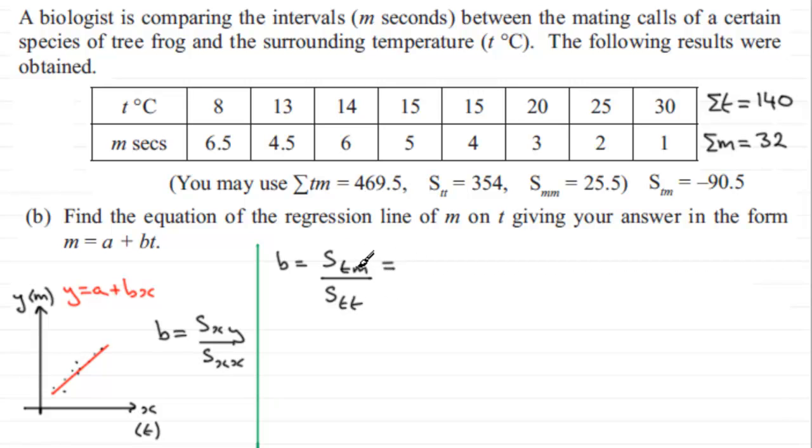So STM, we worked out in the previous part as minus 90.5, and we divide this now by STT, which we're given here is 354. If we do this calculation, we end up with minus 0.2556 and so on. So we've got b.